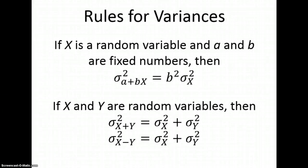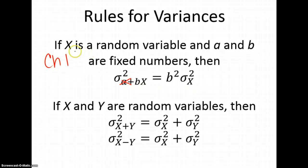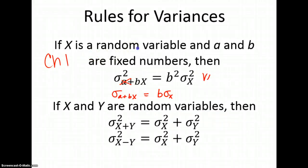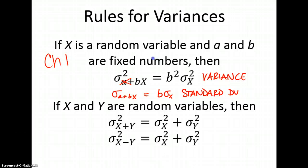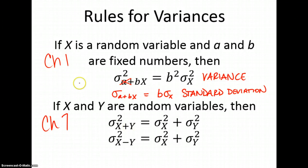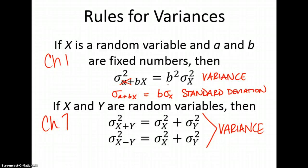Moving on: this is the Chapter 1 rule, which says if X is a random variable and A and B are fixed numbers, then adding A does nothing to the spread. We're used to seeing it as: the standard deviation of A plus BX is just B times the standard deviation of X. If you square everything, you're working in variance. Notice this is variance on one side and standard deviation on the other.